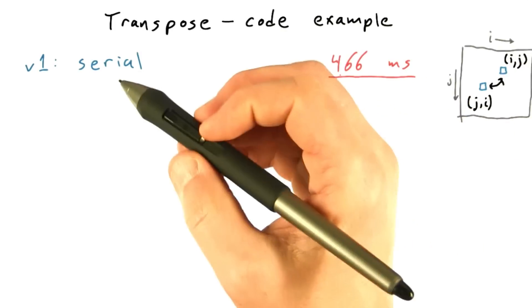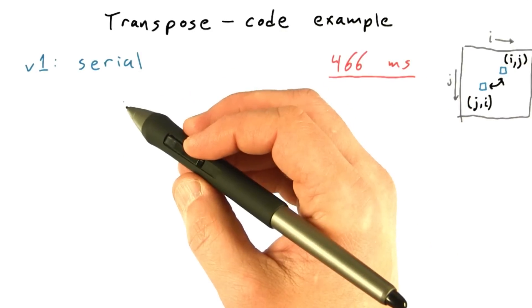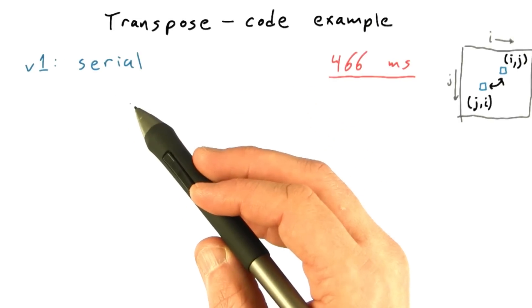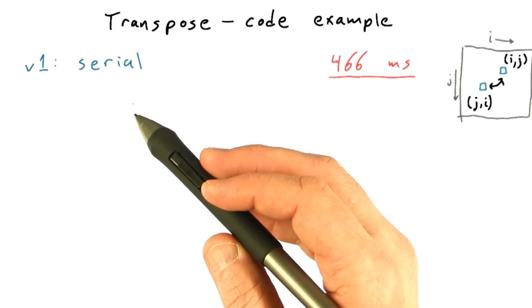So 466 milliseconds is pretty slow, but sometimes that's okay. For code that's only going to be executed once, code that's not performance critical at all, or code that's going to run on a really small data set, like that 8x8 matrix that we started with, it's just not worthwhile to optimize the heck out of this.